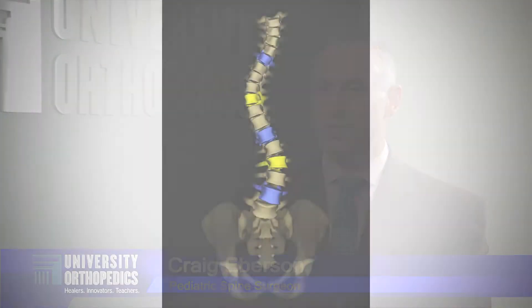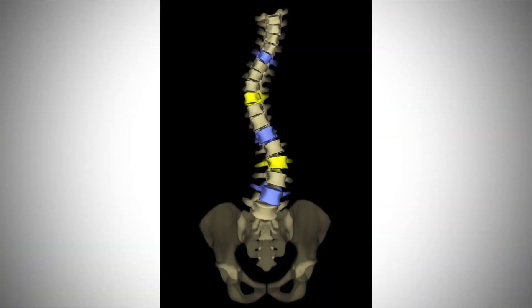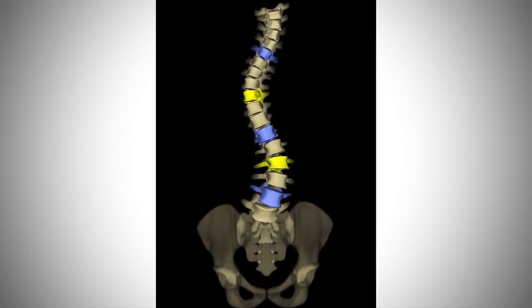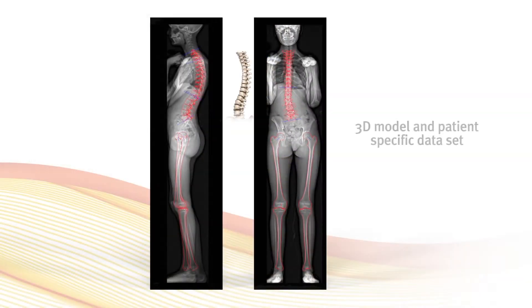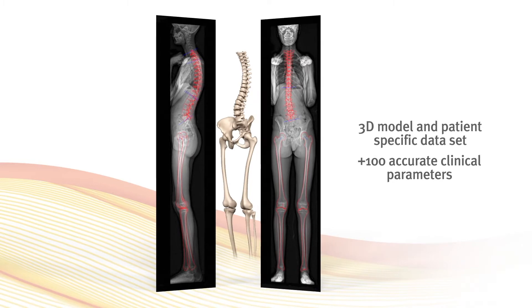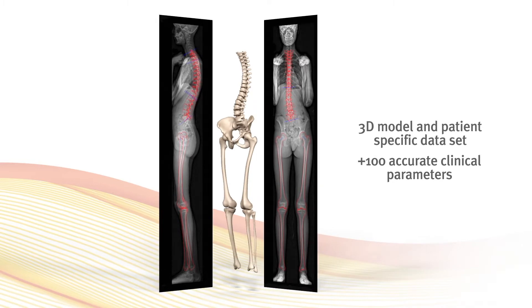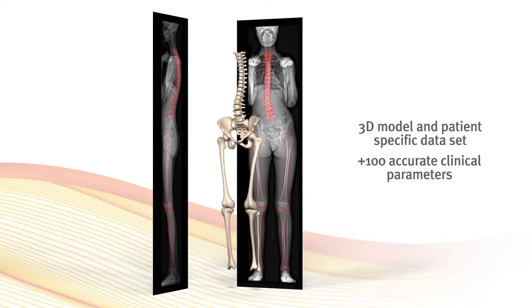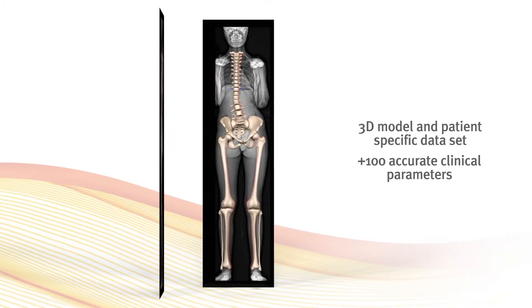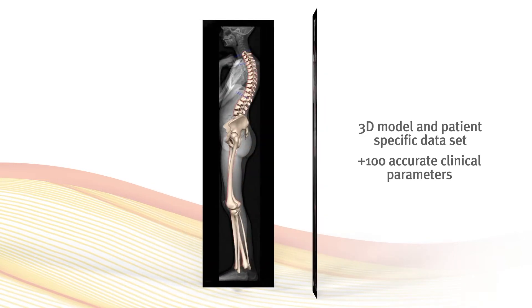University Orthopedics made the decision to buy EOS because this is just a crucial part of our ability to care for patients. In the world of pediatric orthopedics, we've known about EOS for a long time and it's been revolutionary in the way we've evaluated spinal deformity and the effects of our treatment. But when trying to see how this would be useful for a large multi-subspecialty orthopedic group, it takes a little looking into — and what we found is that the applications for EOS aren't just limited to pediatric spinal deformity.